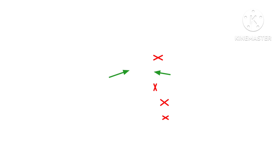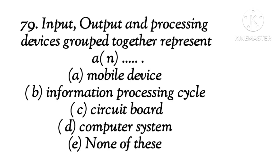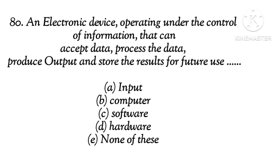Question 29: Input, output and processing devices grouped together represents a dash. The right answer is D, computer system. Question 30: An electronic device operating under the control of information that can accept data, process the data, produce output and store the results for future use. The right answer is B, computer.